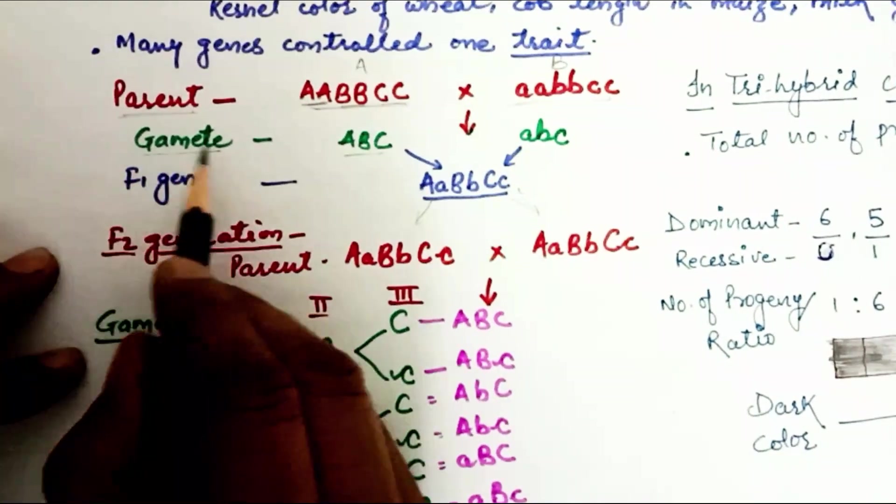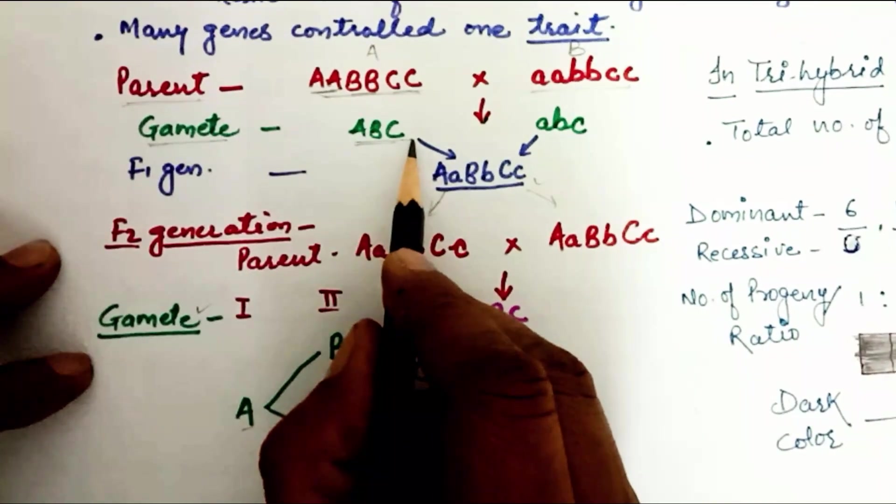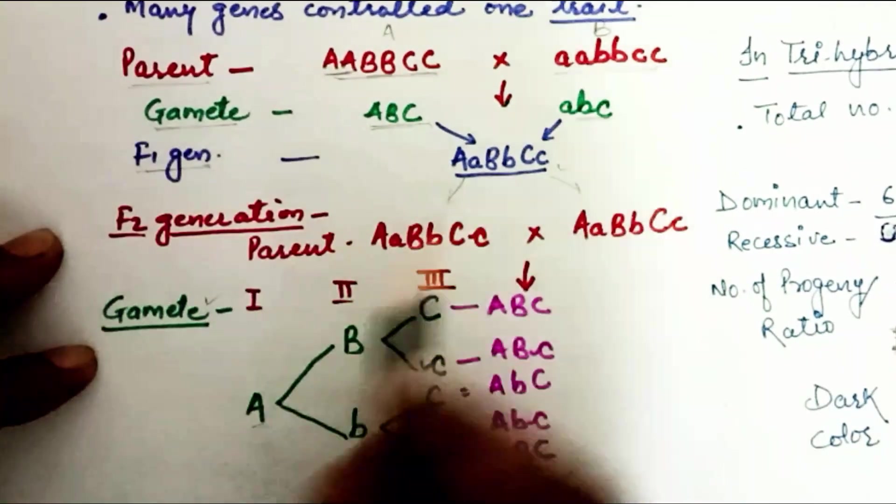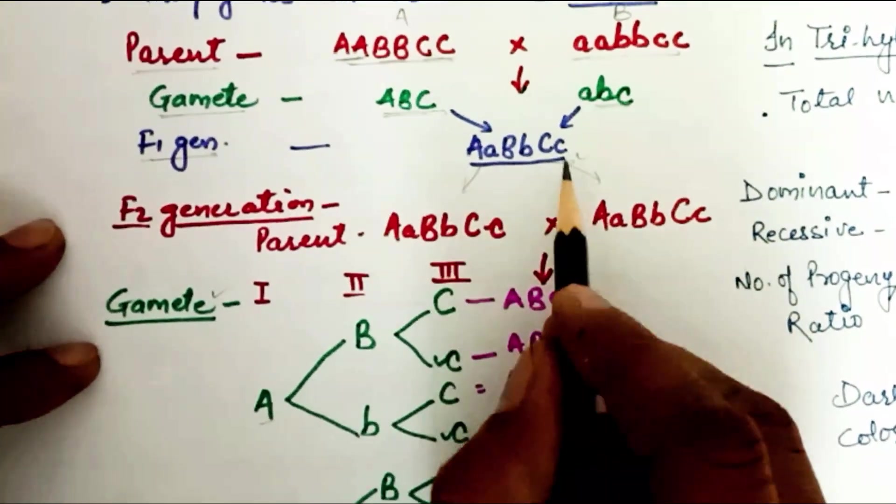This is called Gamete. The dominant gamete and the other one is recessive. In F1 generation, when we cross them, the progeny is hybrid, which is heterozygous progeny.